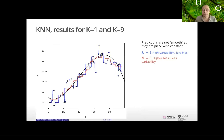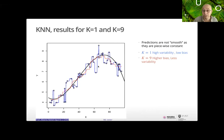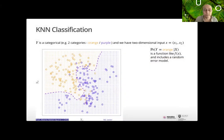For K=1 nearest neighbor there's high variability and low bias — training points are almost exactly predicted, but the graph is very squiggly. For K=9, there's higher bias — we're not touching the real values — but less variability. For classification with KNN, say you have categories orange or purple with two inputs X1 and X2: you find the nearest neighbors in the X1-X2 space and color by majority vote.